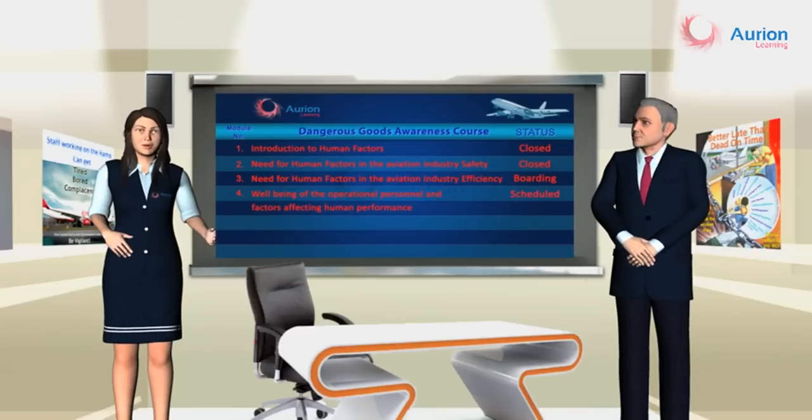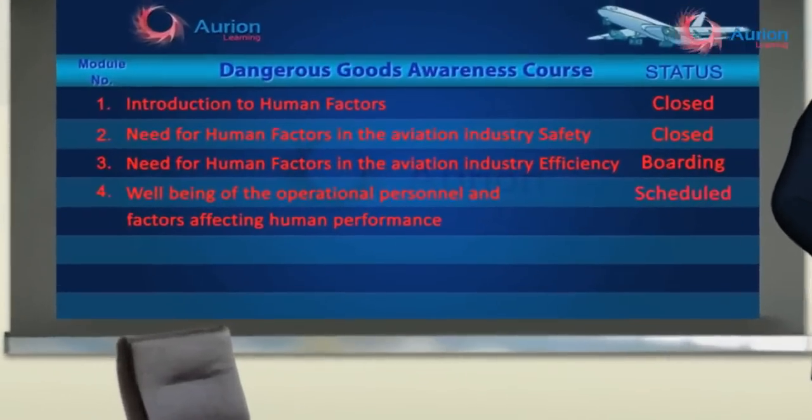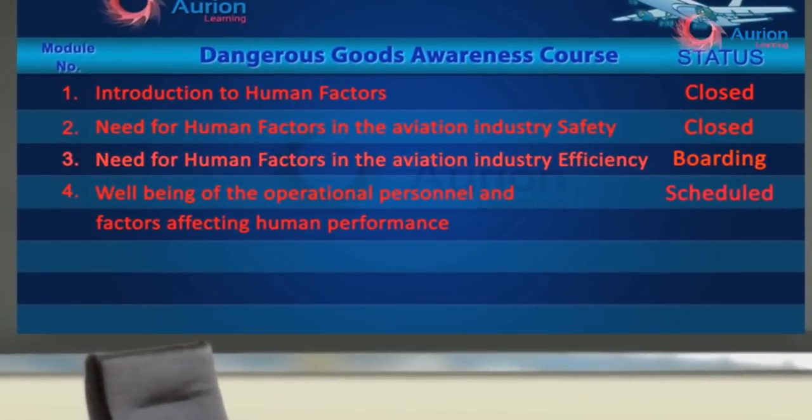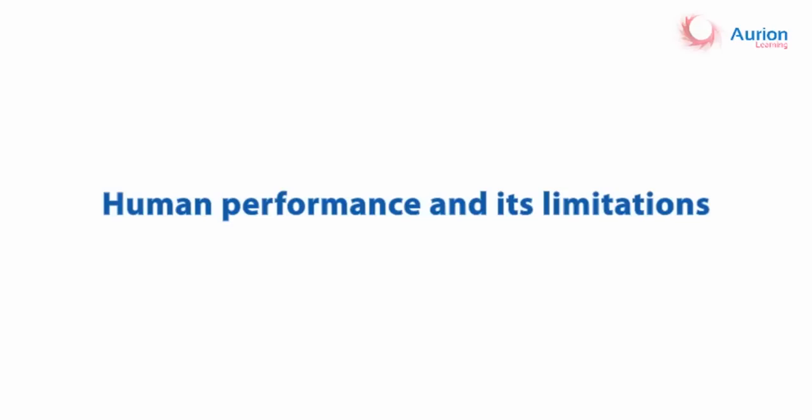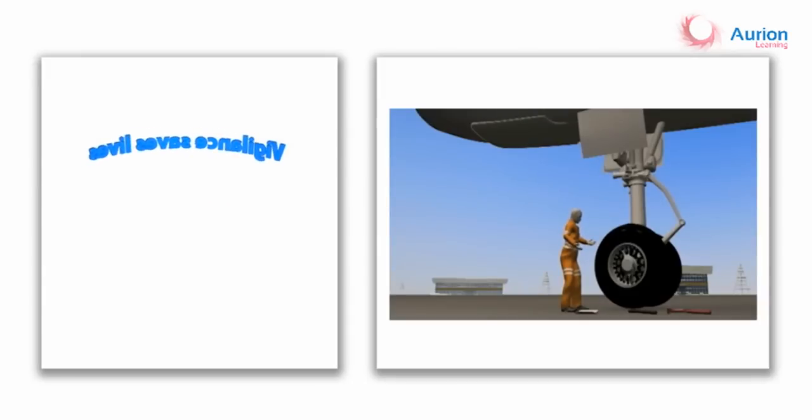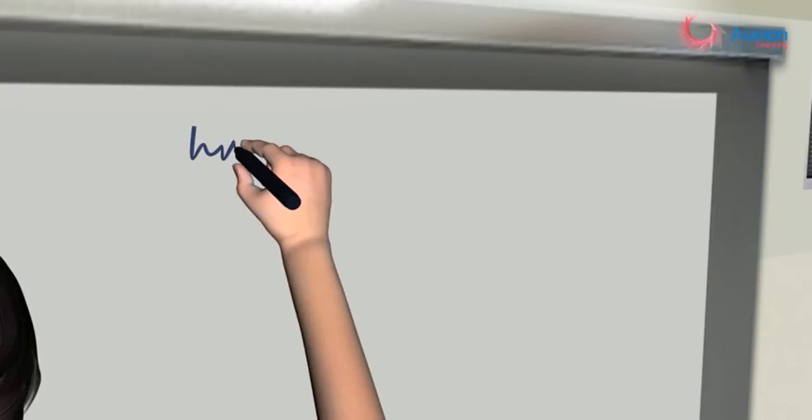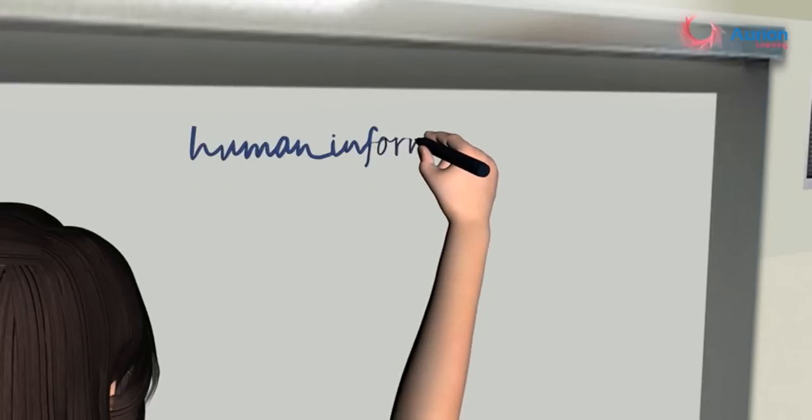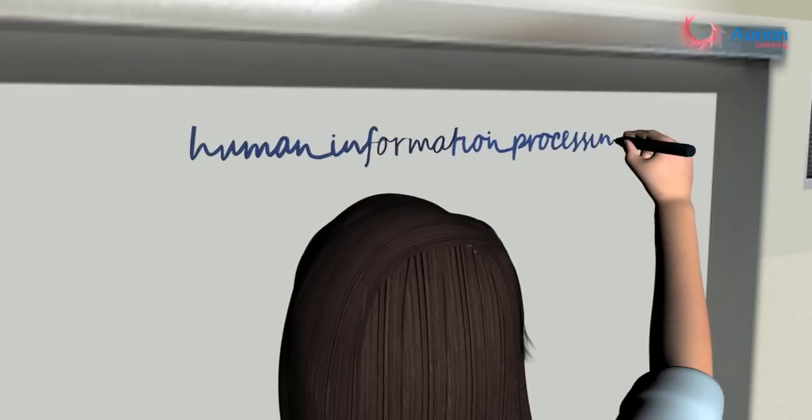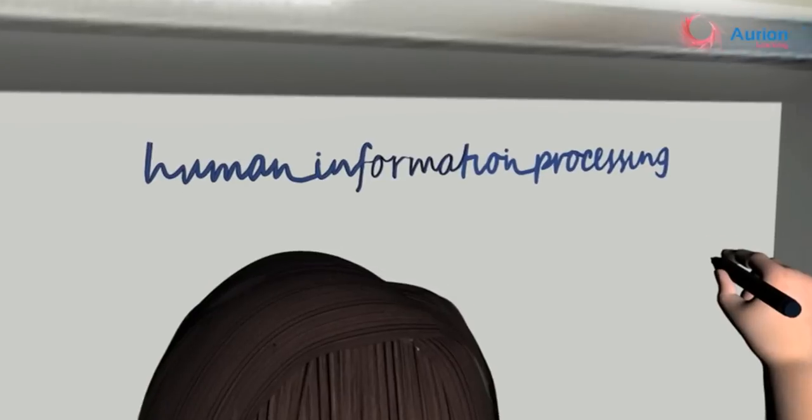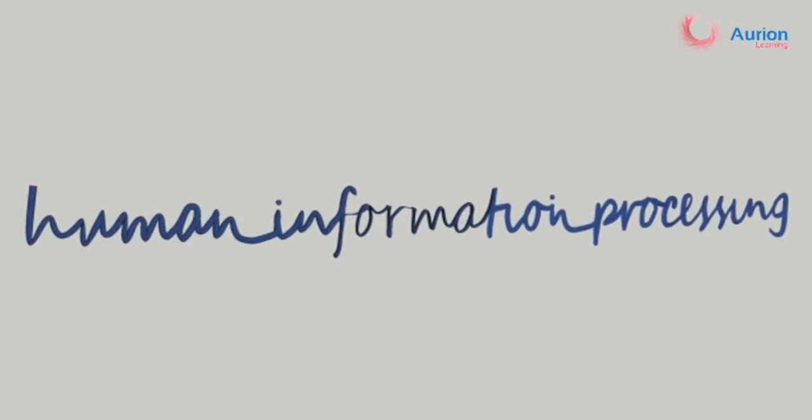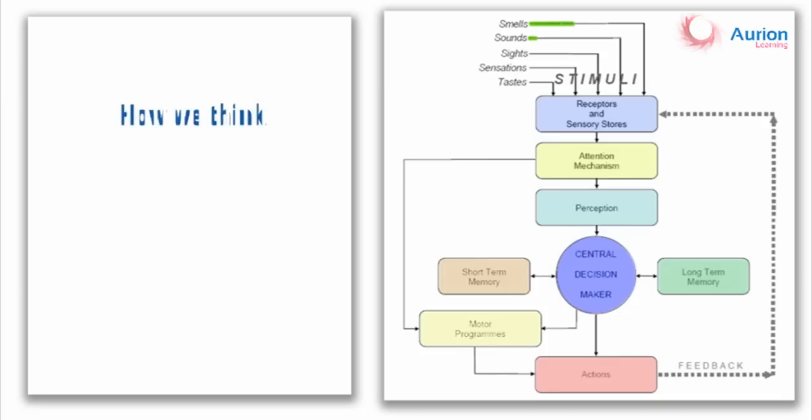Let us now move to the third module which talks about efficiency, the next need for human factors. In this module we shall take a close look at human performance and its limitations. We learned in our previous module about safety and that as humans we all make mistakes, but our vigilance may save lives. Vigilance starts with us, and to understand us better we need to understand what we call human information processing, which is how we think, how we make decisions, and what actions we take.